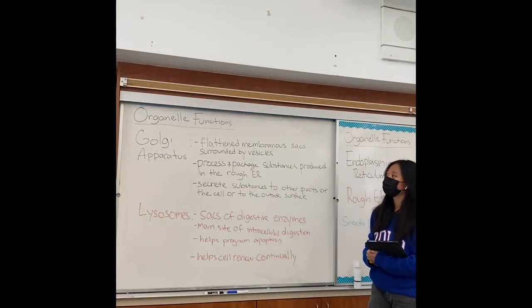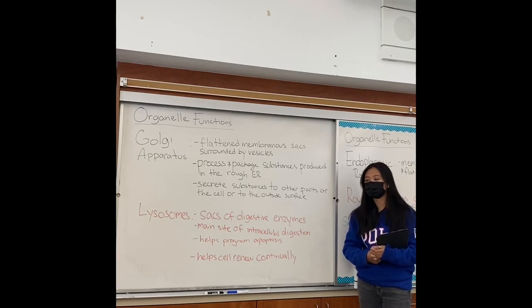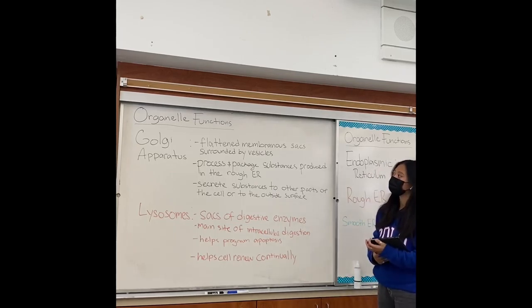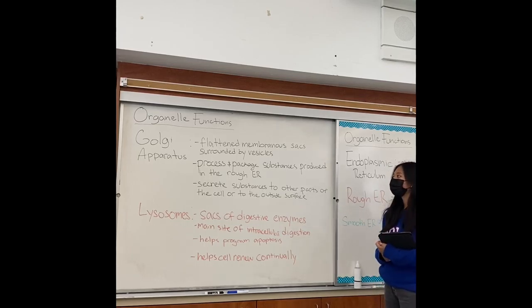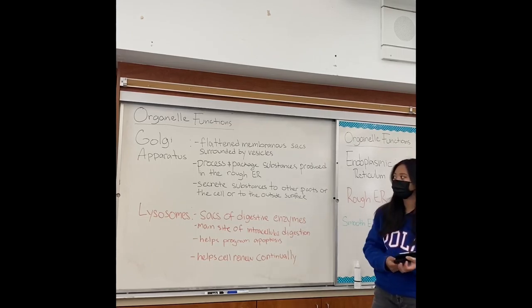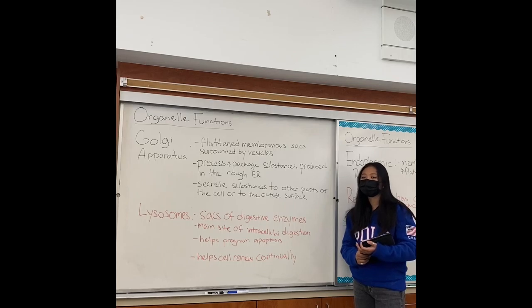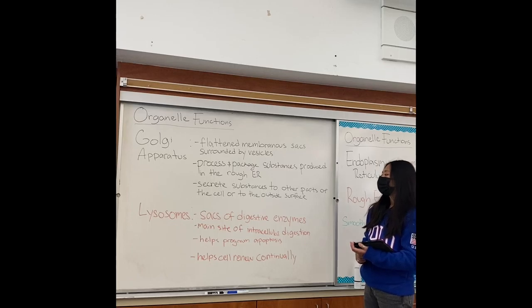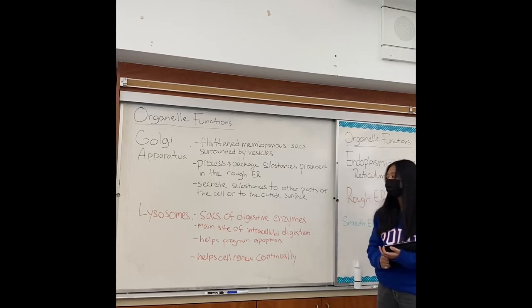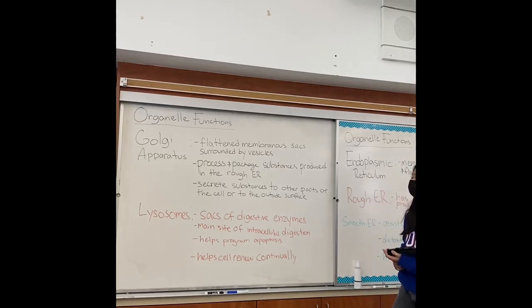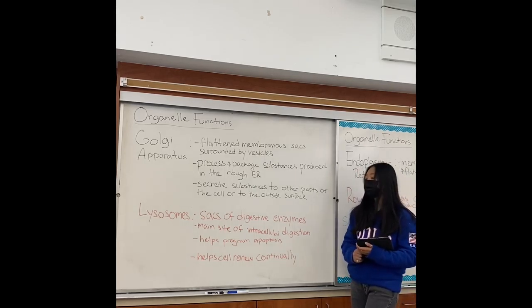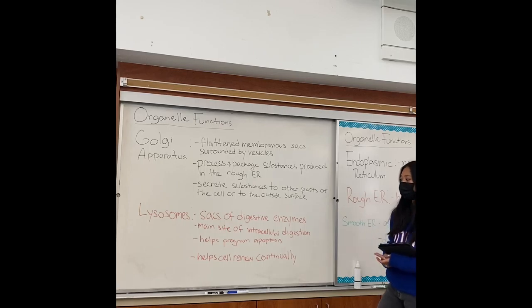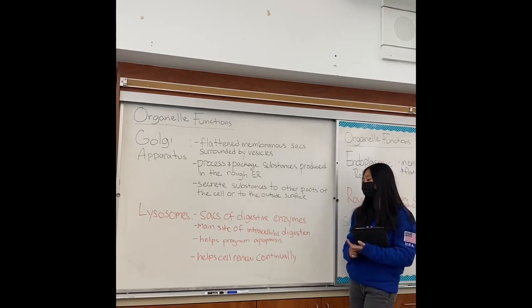Next, I'm going to talk about the Golgi apparatus and the lysosomes. The Golgi apparatus consists of flattened membranous sacs surrounded by vesicles. It processes and packages substances produced in the rough ER, and secretes substances inside the cell or to the surface of the cell. Lysosomes are sacs of digestive enzymes. This is the main site of intracellular digestion. Lysosomes help program cell death, or apoptosis, and help the cell renew continually.